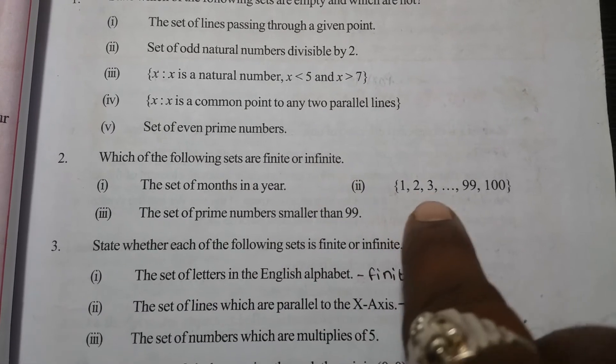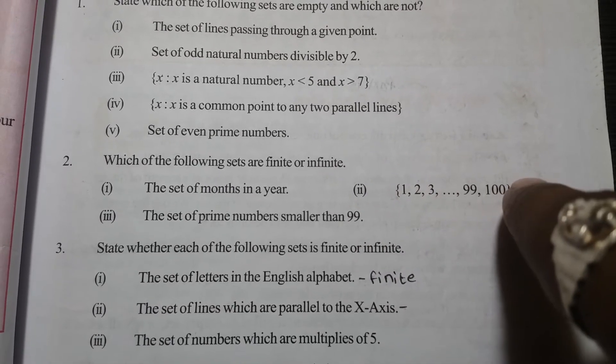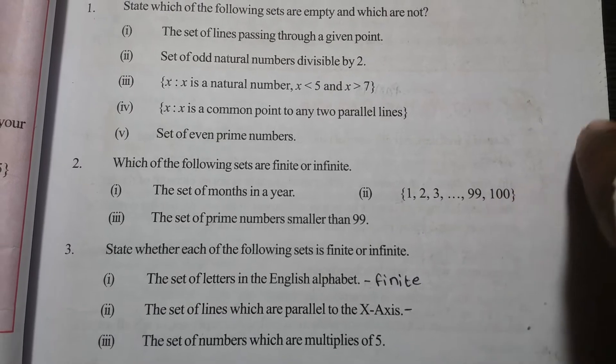1, 2, 3 and so on up to 100. This is also a finite set. We can count the number of elements present in the set. It is a finite set.